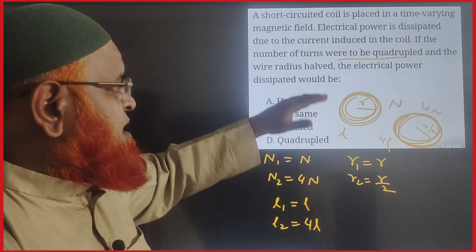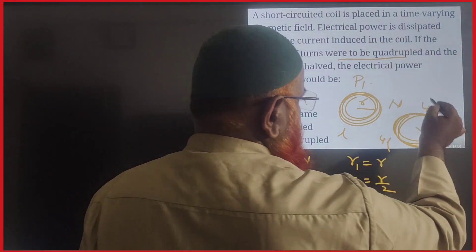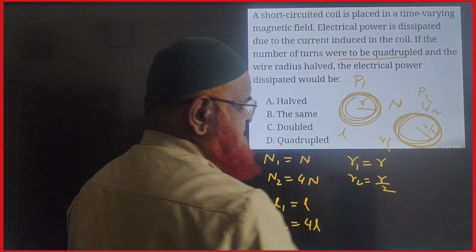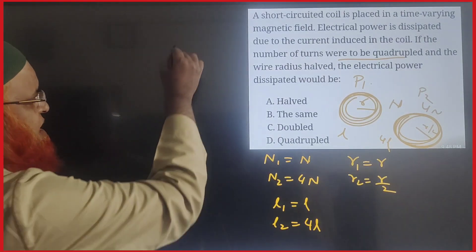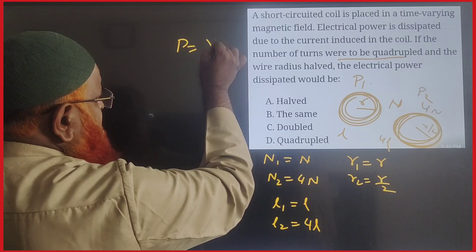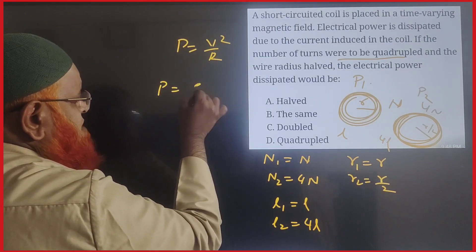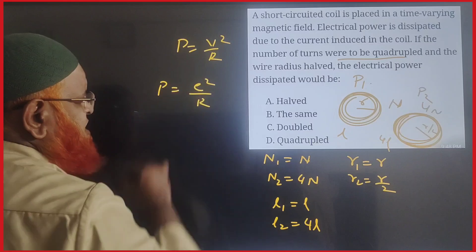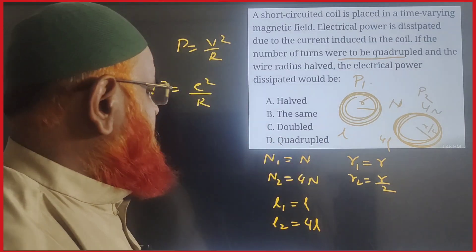It is asking us to find out what happens to the power. If the power in the previous case is P₁, then what is the power in the next case. So first of all, you have to find out what is the formula for power. Power is V²/R, but here power is E²/R because instead of potential we will take EMF here, electromotive force.